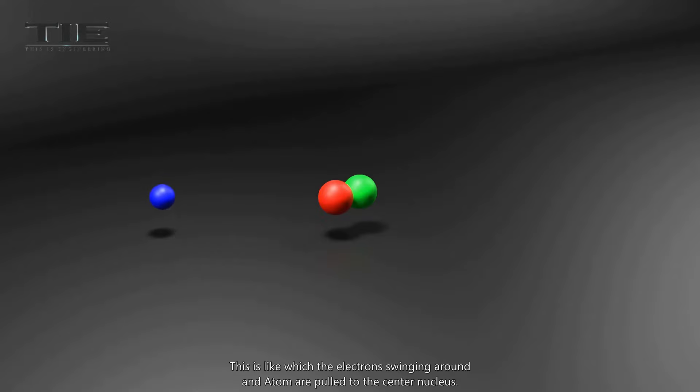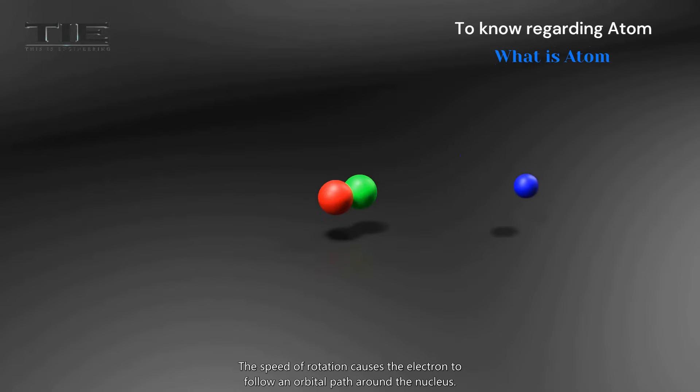This is like how the electrons swinging around an atom are pulled to the center nucleus. The speed of rotation causes the electron to follow an orbital path around the nucleus.